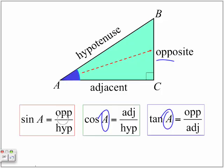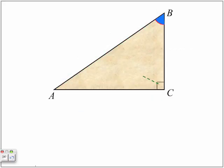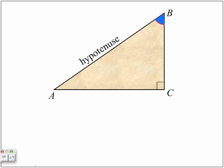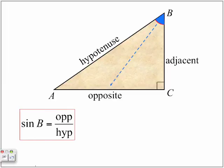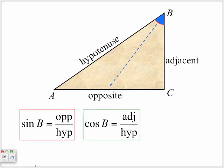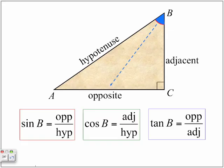How do we remember all these ratios? We can memorize them, or we can come up with the following expression. So we'll label it again. The hypotenuse is always opposite to the 90-degree angle. In terms of angle B, that side is the opposite, and the remaining side is the adjacent. And if we're looking at sine B, cosine B, or tangent of B, these are the specific ratios and sides we're looking for.